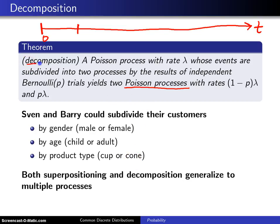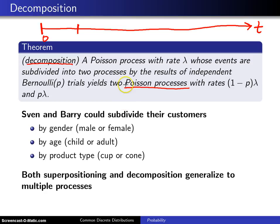This is known as decomposition, and both superposition and decomposition generalize to multiple processes. Even though we're breaking the Poisson process into two pieces here, if we want to roll a die and have six different ways of breaking it down, you can decompose it six ways, and a generalization of this applies.